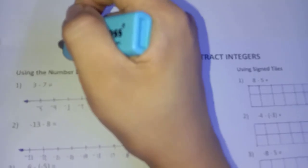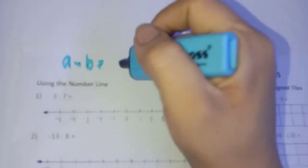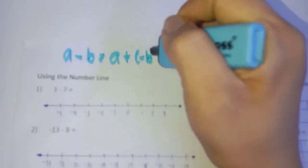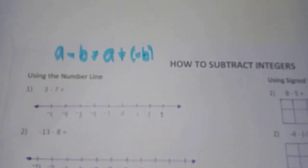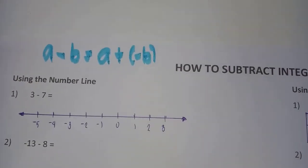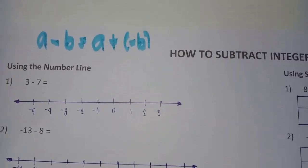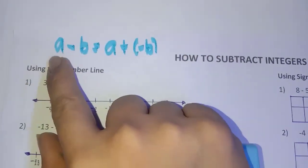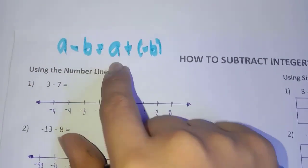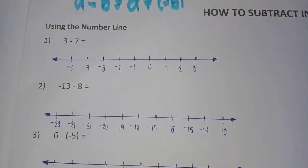If a and b are integers or real numbers in general, then a minus b is also the same as a plus negative b. So we can rewrite our subtraction problem using an addition problem: a minus b is the same as a plus negative b.